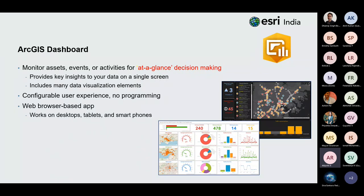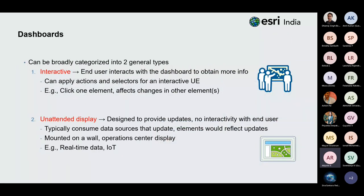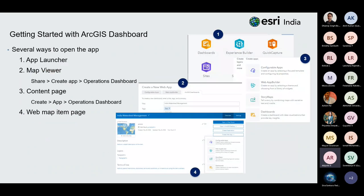ArcGIS Dashboard works on desktops, tablets, and smartphones. ArcGIS Online gives you full control of sharing your dashboard — you can decide who sees it: your team, your organization, or even the public. A dashboard can be broadly classified into two types: interactive or attended dashboards where the end user interacts, and unattended dashboards that consume data sources where all elements reflect updates in real time for monitoring.